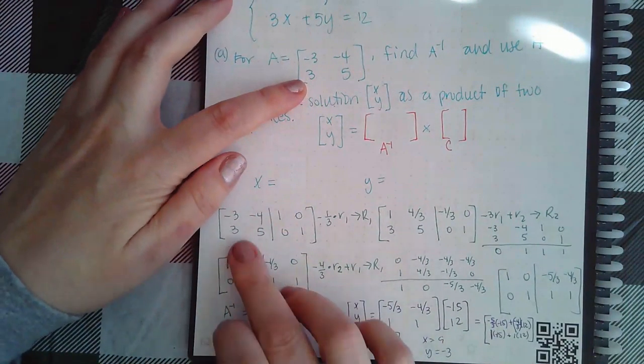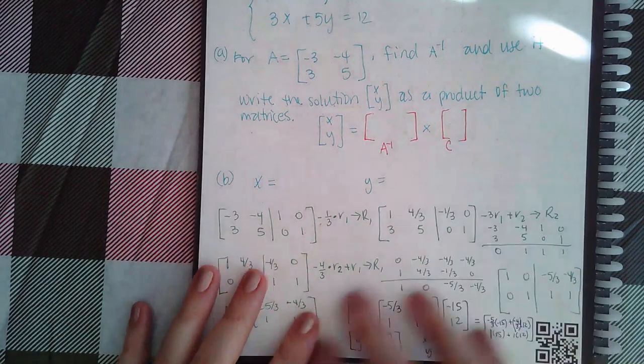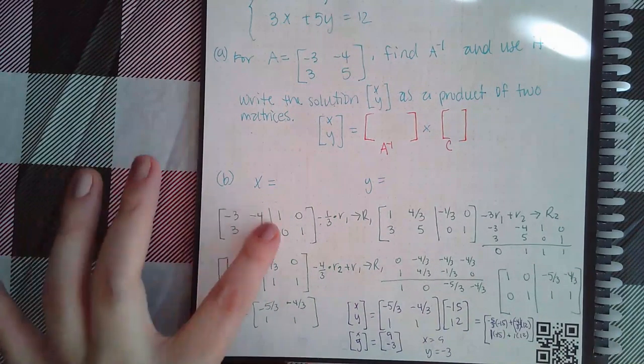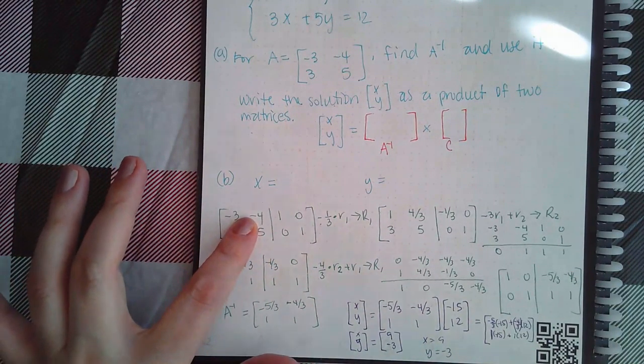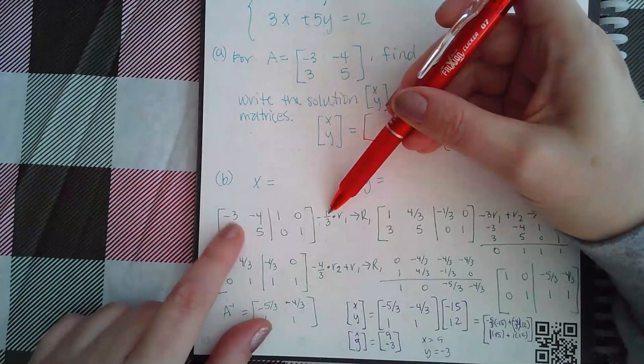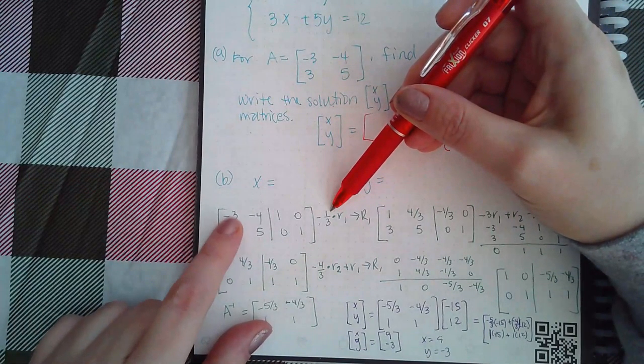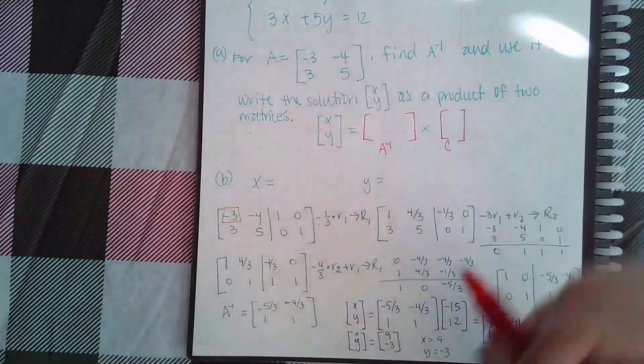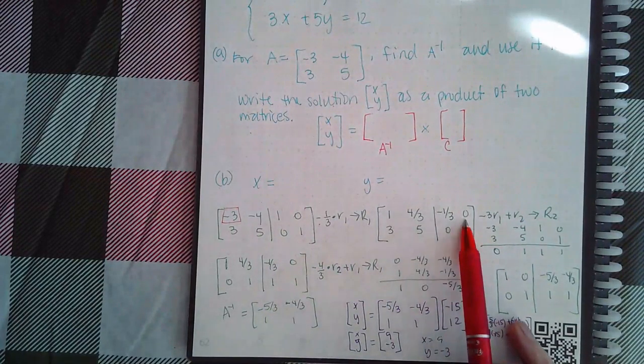So first we put that matrix A on the left-hand side, put the identity on the right-hand side, and then do all of our operations so that we can turn the left-hand side into the identity. So the first thing we did was multiply by the reciprocal of this number here to change this number into a one. And so we ended up with these entries here.